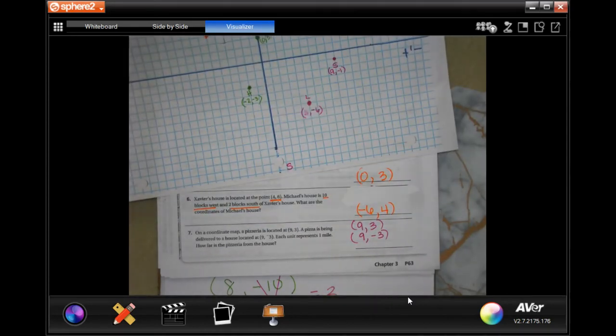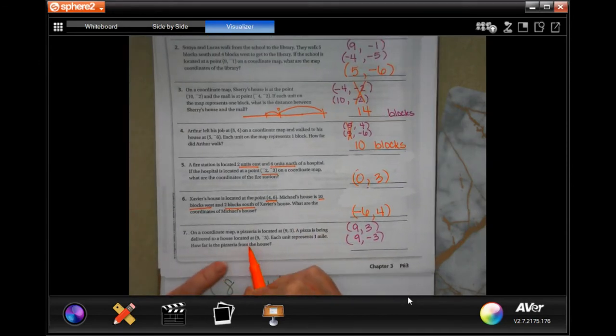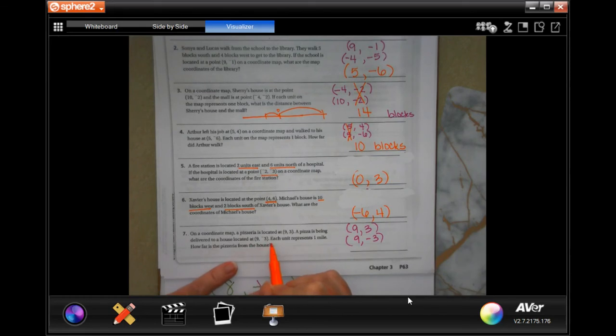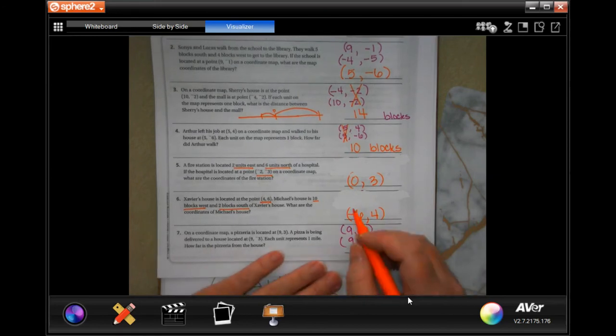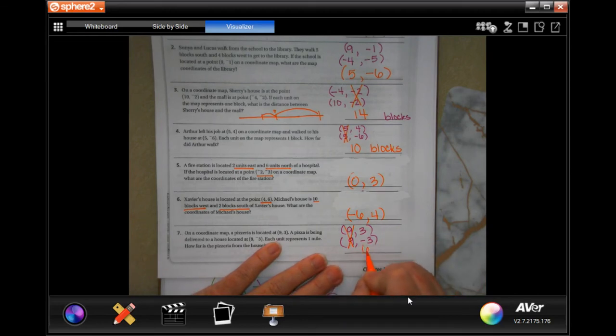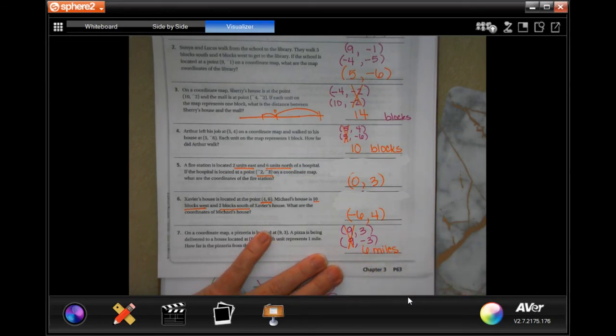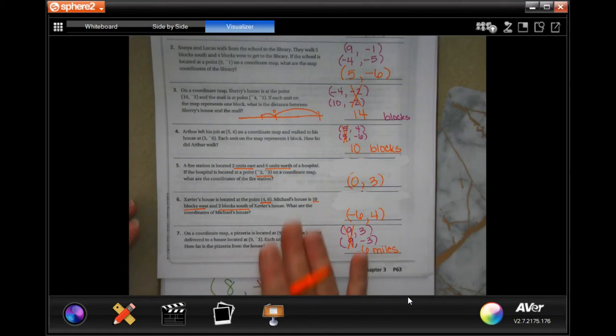Again, on a coordinate map, the pizzeria is located at 9, 3. The pizza being delivered to a house located at 9, negative 3. Each unit represents one mile. How far is the pizzeria from the house? Well, see those nines? Identical. 3 plus negative 3, 6 miles. 3 and 3. Positive and a negative, you add them together. 6 miles.